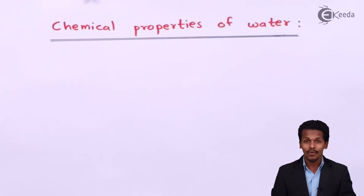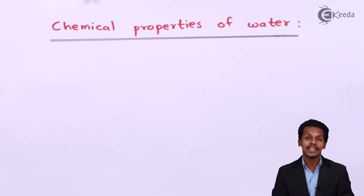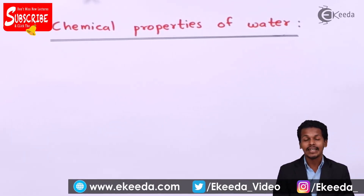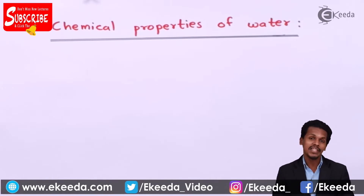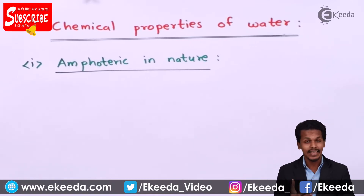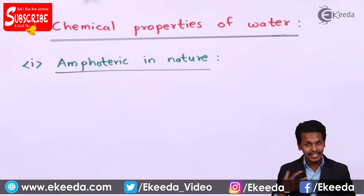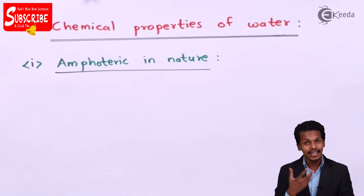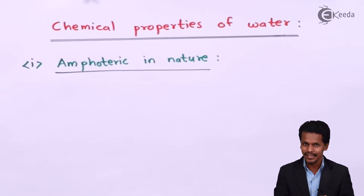Talking about the chemical properties of water, the first one is that water is basically amphoteric in nature. That means water can act like an acid as well as it can act like a base.